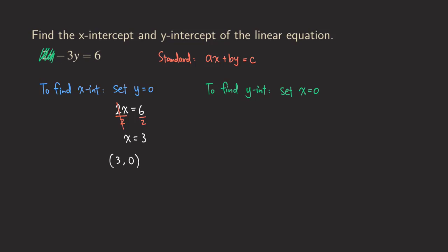So now this is another simple equation we get here: negative 3y equals 6. What do we do? We divide both sides by negative 3, and then we can cancel those, and then we have y equals 6 divided by negative 3, we get negative 2.